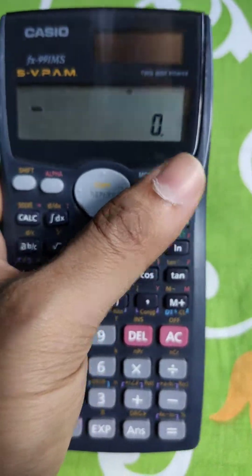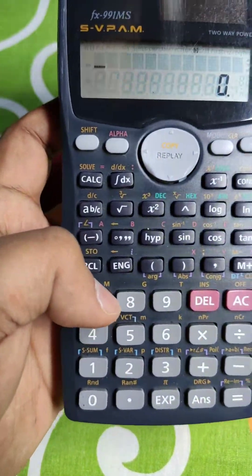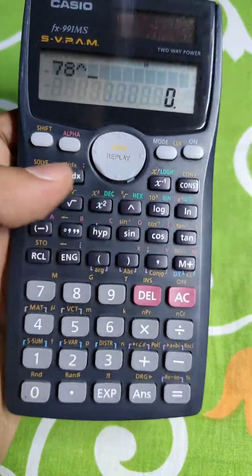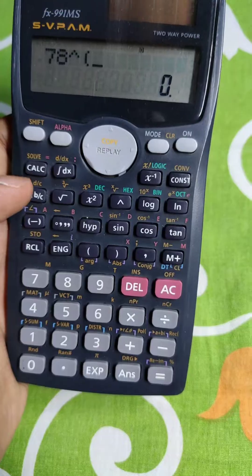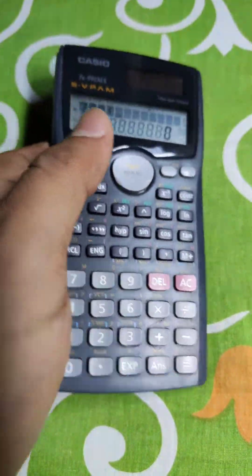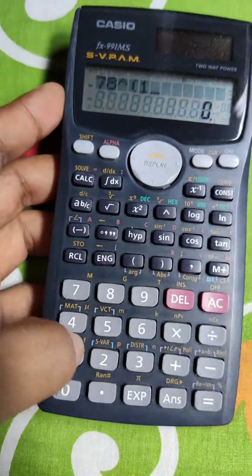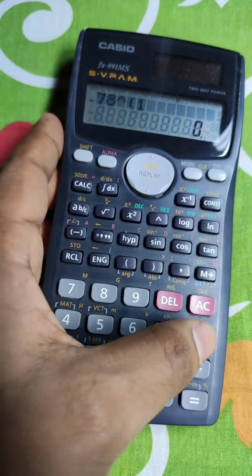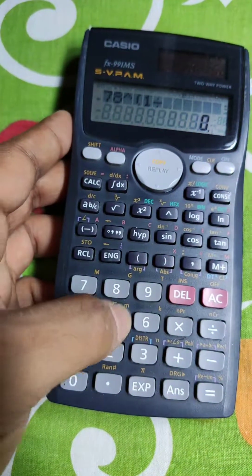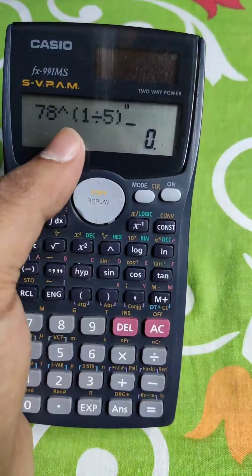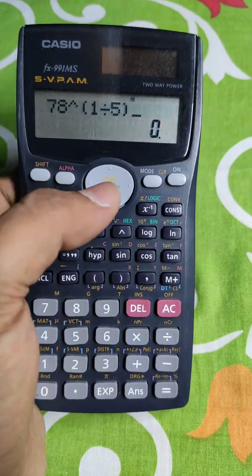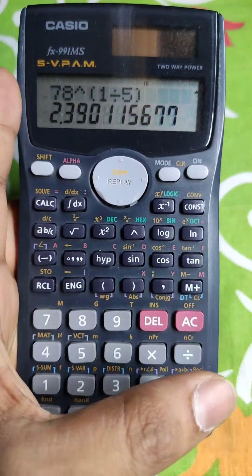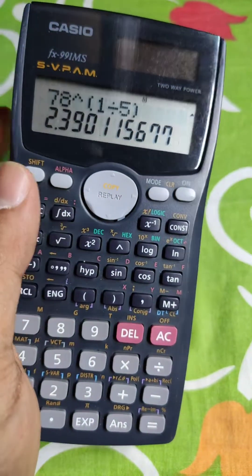Now the second method of nth root is simply 78 to the power 1 by 5. Where is 1 by 5? This is the way of writing 78 to the power 1 by n. 1 by n means nth root. So this is the answer.